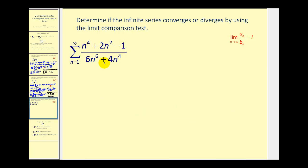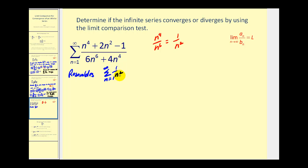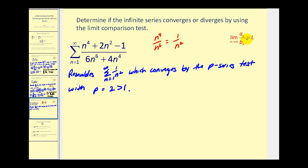Let's look at one more. Considering just the highest powers of n in the numerator and denominator, we'd have n to the fourth and n to the sixth in the denominator. Taking n to the fourth over n to the sixth and simplifying gives one over n squared. So this series resembles the summation of one divided by n squared, which converges by the p-series test with p equal to two, which is greater than one. If we take the limit of this quotient and it's positive and finite, since this series converges, we can show that the given series converges.